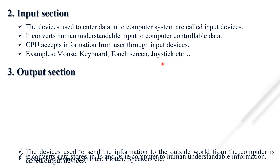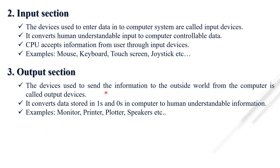The output section consists of devices used to send information from the computer to the outside world. These are called output devices. They convert data stored as 1s and 0s in the computer into human-understandable information. Examples of output devices include monitor, printer, plotter, and speakers.